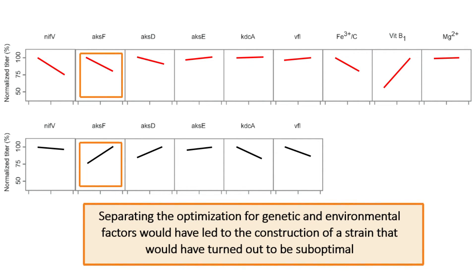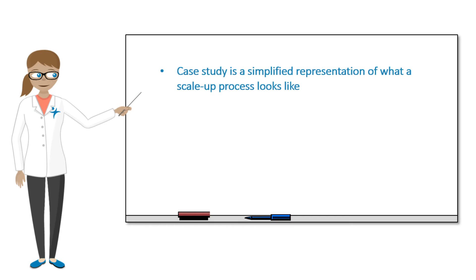Separating the optimization for genetic and environmental factors would have led to the construction of a strain that would have turned out to be suboptimal. This case study is a simplified representation of what a scale-up process looks like.